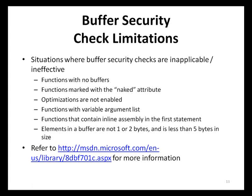None of the compiler defenses provide a silver bullet for complete protection. With respect to buffer security checks, there are certain situations where this defensive measure may not be applicable or effective. For example, if a function does not contain a buffer, buffer security checks are not applied. Functions with variable argument lists are also not protected. If a function is marked with a naked attribute — which instructs the compiler not to generate code for the function prologue or epilogue — buffer security checks are not applied. These limitations are further evidence as to why compiler defenses should not be used as a replacement for secure coding practices.